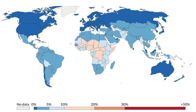About 80% of these occur in Sub-Saharan Africa and South Asia, and just six countries account for half of all under-five deaths: India, Nigeria, Pakistan, the Democratic Republic of the Congo, Ethiopia, and China. 45% of these children died during the first 28 days of life.